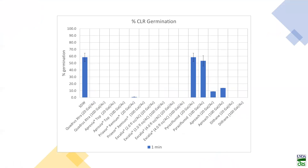Looking at the systemic products that the IR4 program will be testing in the field — compared to the sterile water control — this graph shows low and high rates of Quadris Extra, Aprovia, Preaxor, Excalia, Pyrafloxamide, Approach, and Dithane. Even at essentially a one-minute contact time, most of these products kill spores on direct contact.